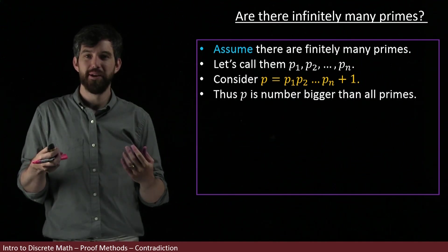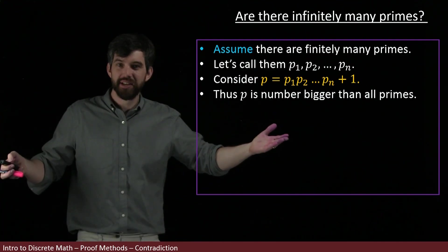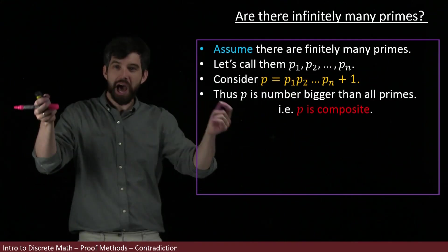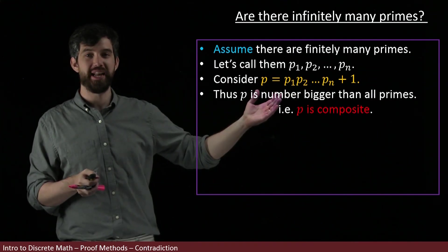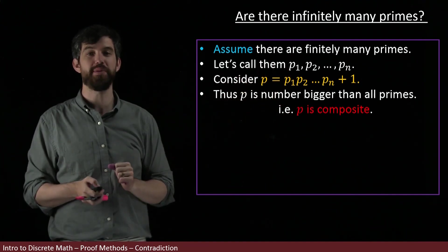In other words, because it's bigger than them all, I can conclude that it can't be on the list. It's not one of those primes; it's bigger than all the primes. So it's not a prime number, or another way of saying it: it is a composite number.